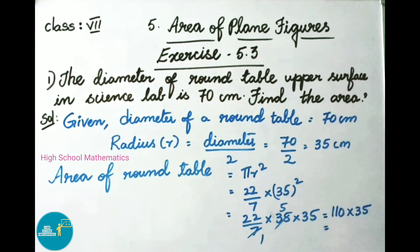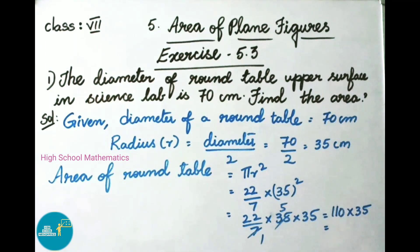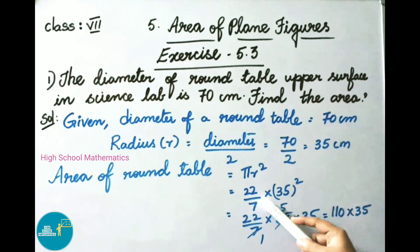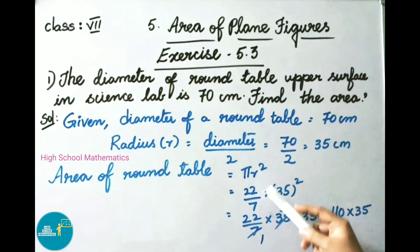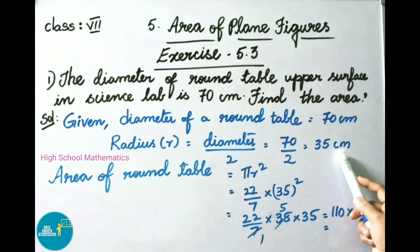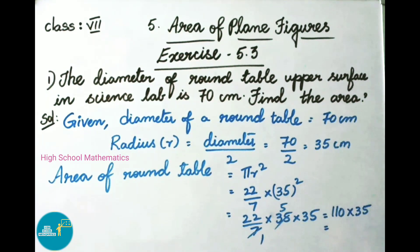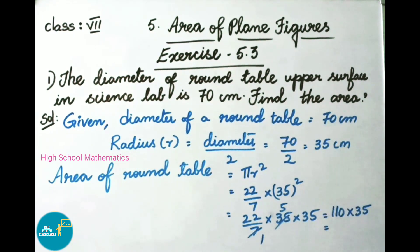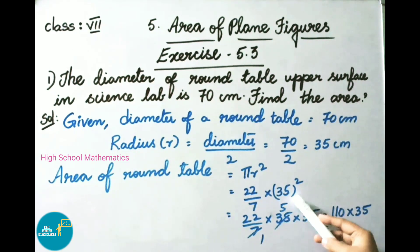Now we are going to find the area of the round table, that is pi R squared. That equals pi value 22 by 7, into R value 35, whole squared. That equals 22 by 7 into 35 multiplied by 35. 7 ones are 7, 7 fives are 35.